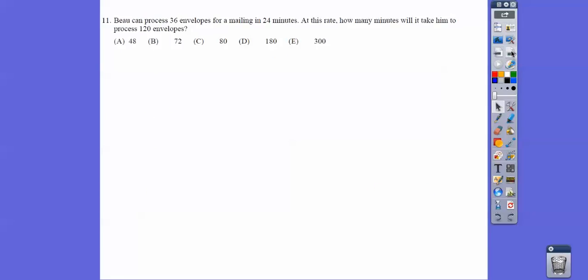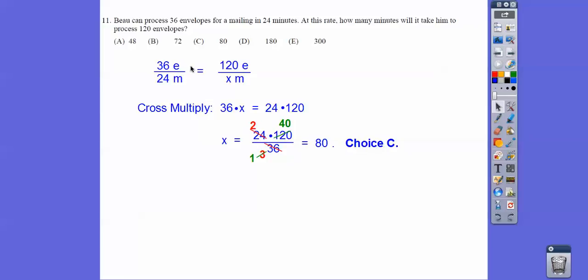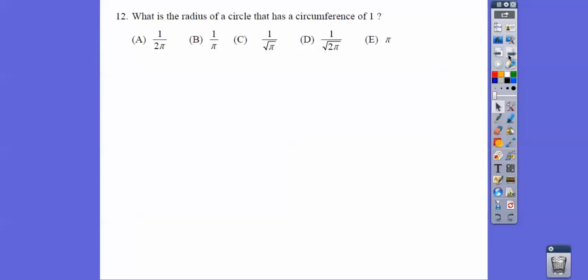All right, so here we go. Bayou can process 36 envelopes for mailing in 24 minutes. This is a proportion one. Just make sure whatever you put on top has to be on top. So 36 envelopes over 24 minutes equals 120 envelopes over X minutes. Cross multiply. You get choice C.